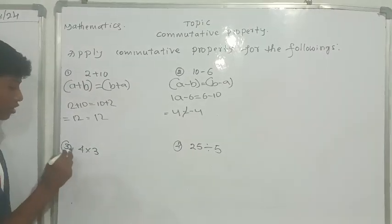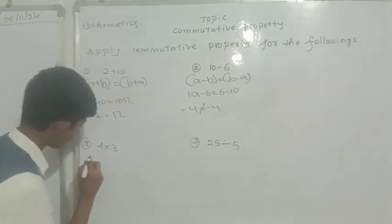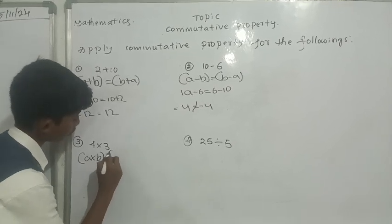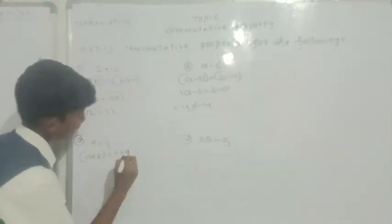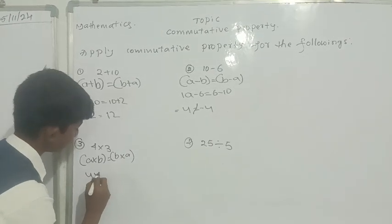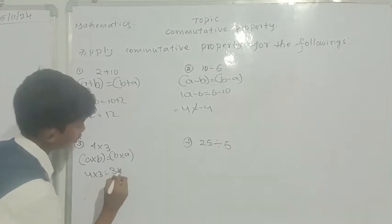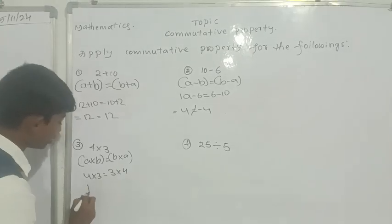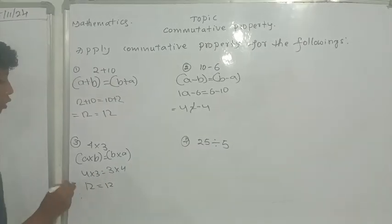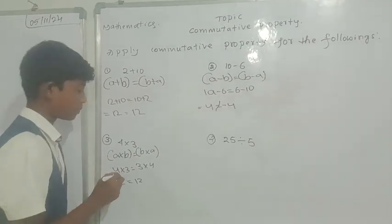Third question is 4 into 3. The formula is A into B is equal to B into A. 4 into 3 is equal to 3 into 4. 4 times 3 equals 12, is equal to 3 times 4 equals 12. Commutative Property holds good under multiplication.